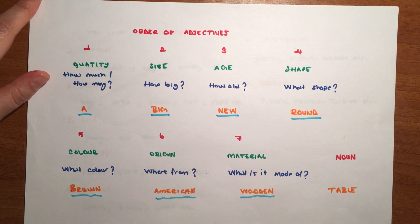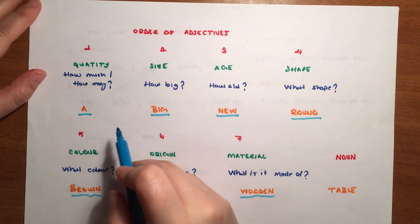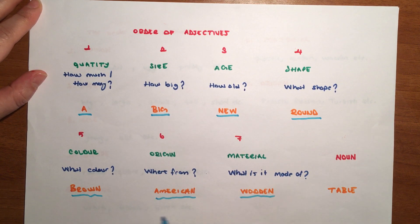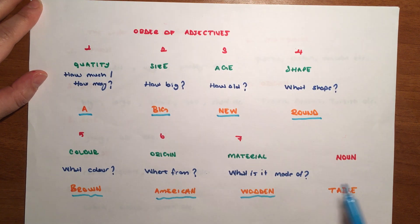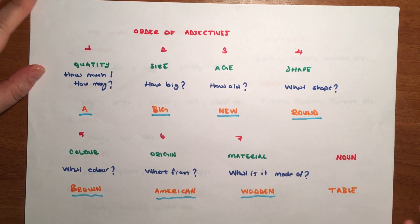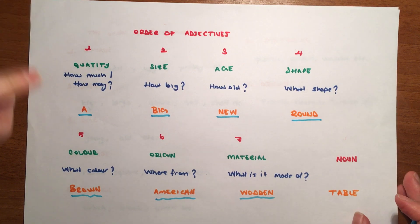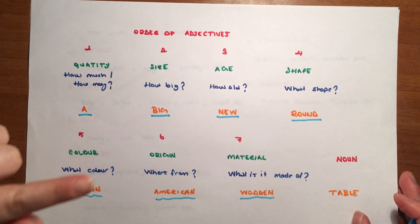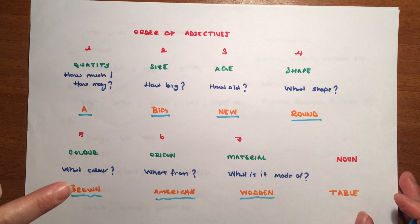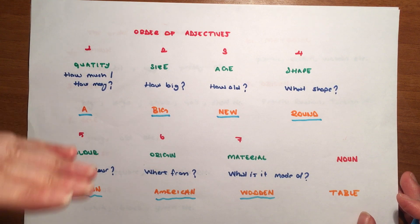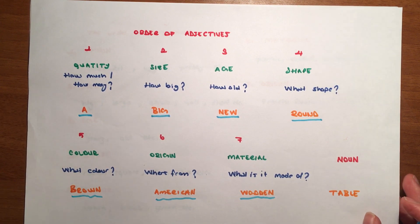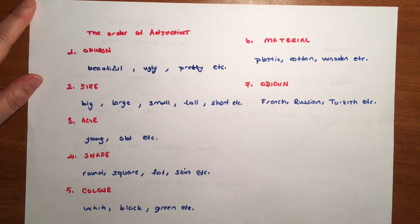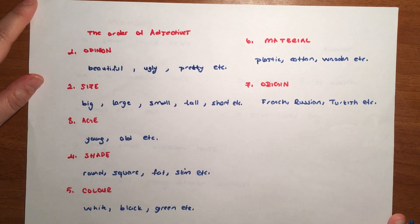We defined a single table with many adjectives. What did we say? Big, new, round, brown, American wood, American wooden table. And so we made a long adjective phrase.